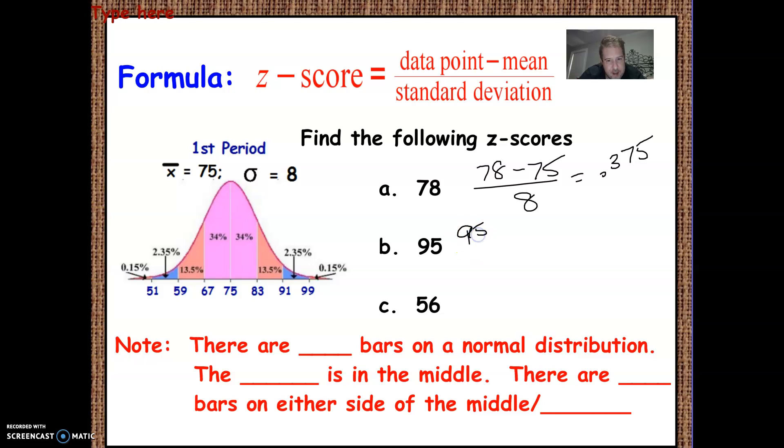So this is 95 minus 75 divided by 8. So I'll do this top first. 95 minus 75 gives us 20. And then 20 divided by 8 is 2.5.